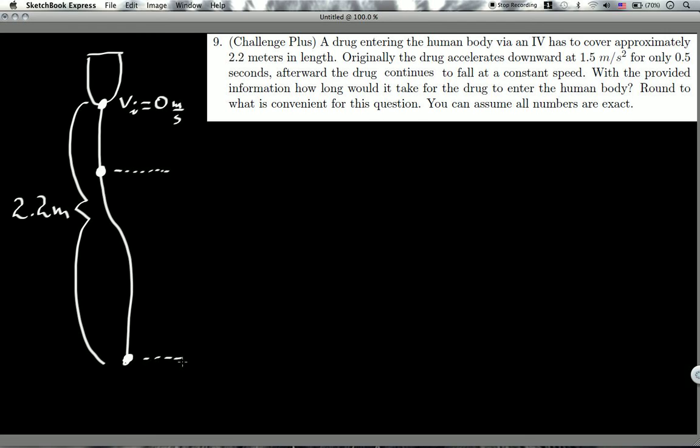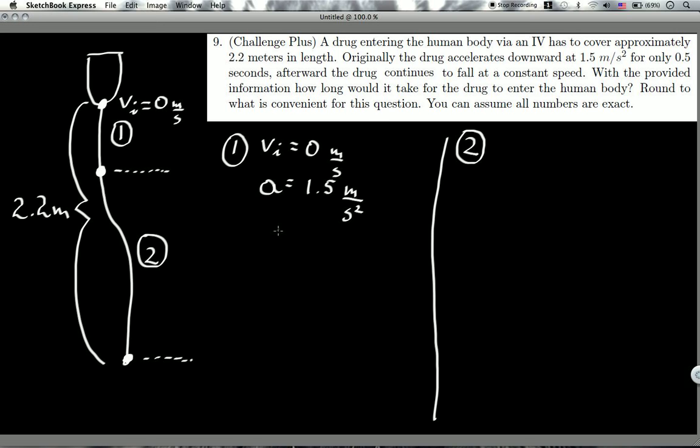So we have two regions here: Region 1 and Region 2. For Region 1, I know that initially I start at 0 meters per second. I accelerate at 1.5 meters per second squared, and I know that my time during this region is 0.5 seconds.